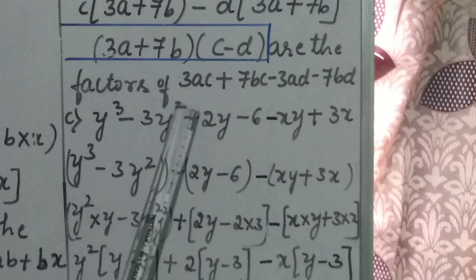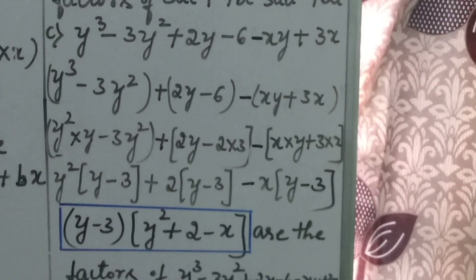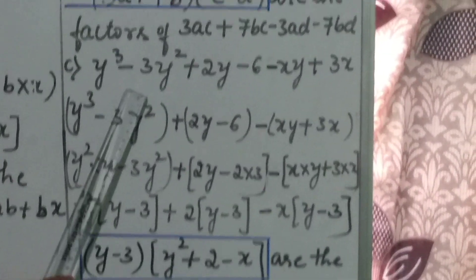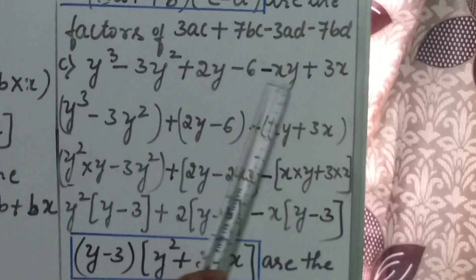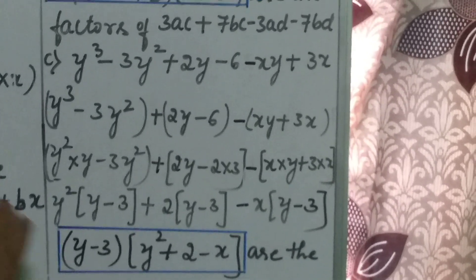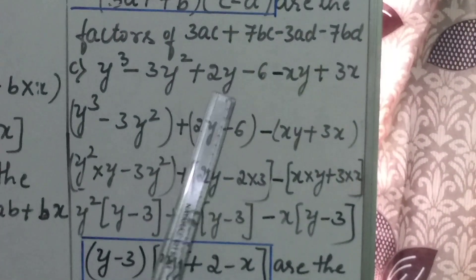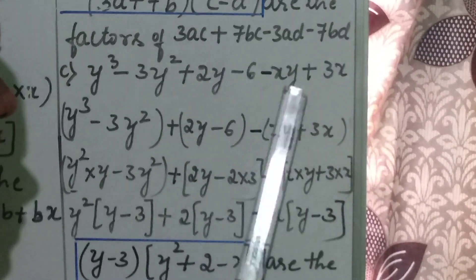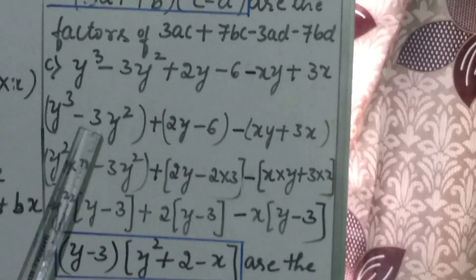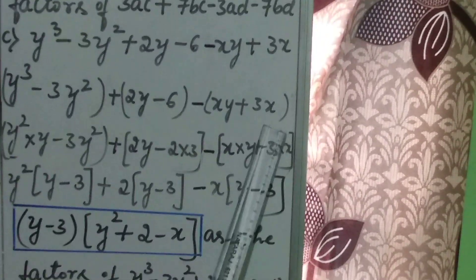Moving on to another example using the same method: y cube minus 3y square plus 2y minus 6 minus xy plus 3x. Observe carefully children — in the previous problems, how many terms were given? 4 terms. But in this problem, how many terms are given? Count: 1st, 2nd, 3rd, 4th, 5th and 6 terms. Here, you consider 2 terms per group. The first group is y cube minus 3y square, the second group is 2y minus 6, and the third group is minus xy plus 3x. So we are making 3 groups.